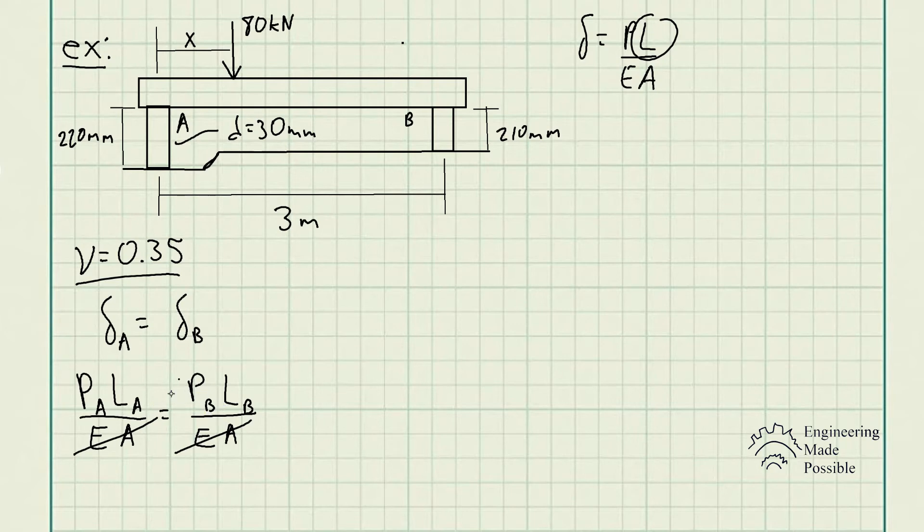Now in this case, you could actually solve for either of the forces and come up with a relationship. So let's solve in this case for P_A. So P_A is equal to L_B over L_A times P_B. So this is one relationship that we're going to be using.